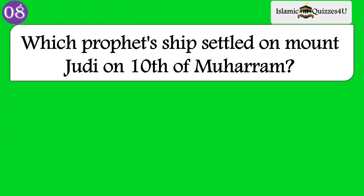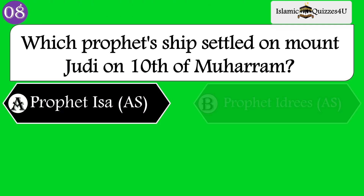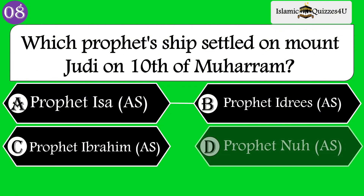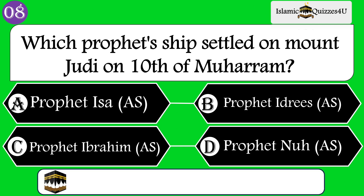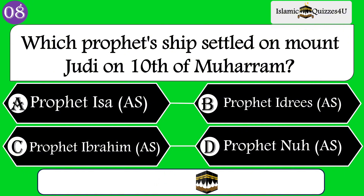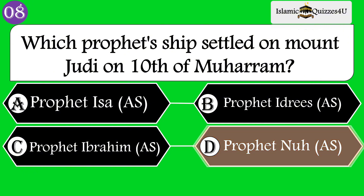Question number 8: Which prophet's ship settled on Mount Jordi on the 10th of Muharram? Option A: Prophet Isa. Option B: Prophet Idris. Option C: Prophet Ibrahim. Option D: Prophet Nuh. Correct option is: Prophet Nuh.